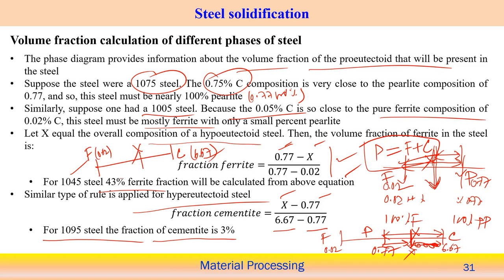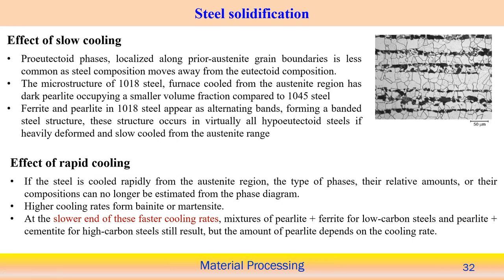A 1005 steel (0.05 wt% C) is very close to the ferrite composition (0.02 wt% C) and will therefore be mostly ferrite - about 98-99% ferrite - with a very small percentage of pearlite. Between 0.028 wt% C (100% ferrite) and 0.77 wt% C (100% pearlite), any intermediate carbon percentage forms a mixture of ferrite plus pearlite in proportionate amounts.